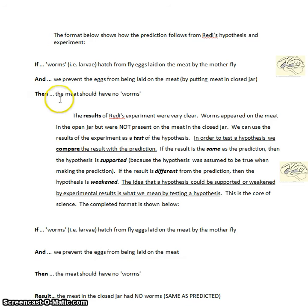The then, then the meat should have no worms. Notice that prediction follows from the truth of the hypothesis and the experiment that we do. If this hypothesis is true, that flies have to get to the meat to lay eggs that turn into worms, and we prevent the flies from getting to the meat, then the meat should have no worms.